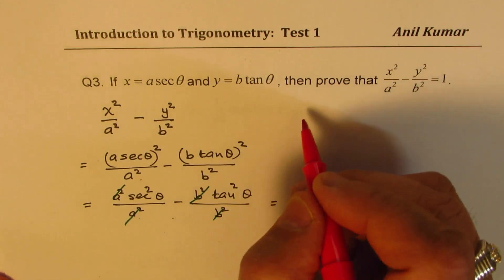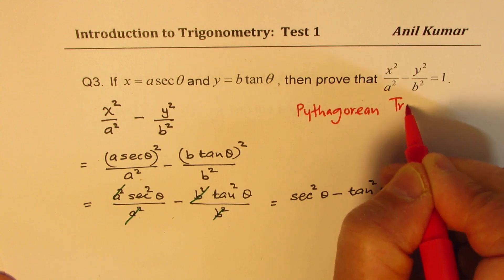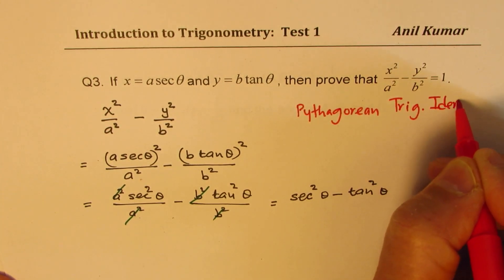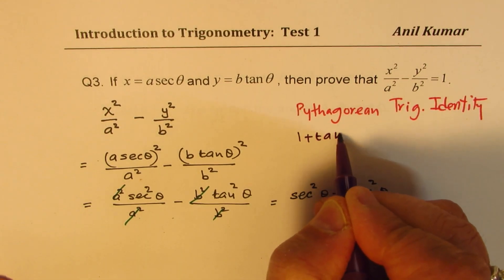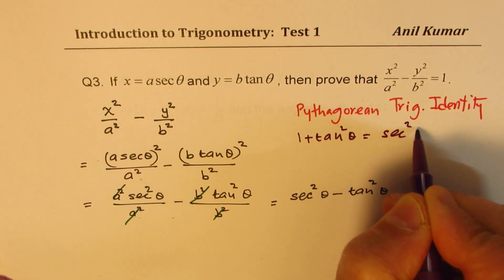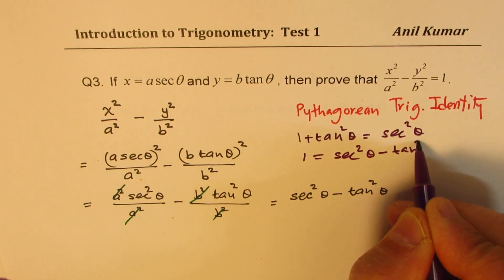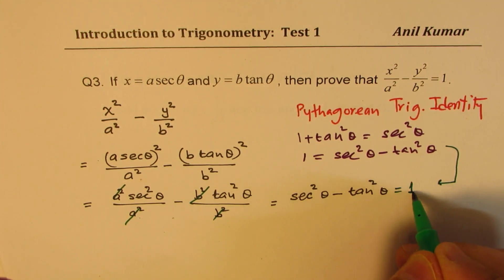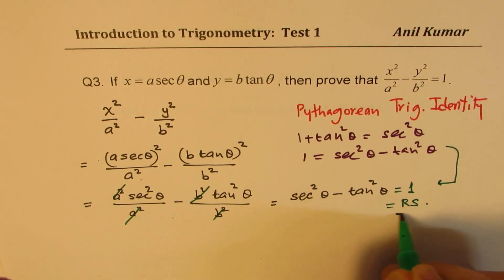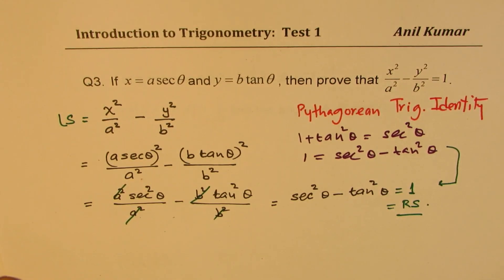Is secant squared theta minus tan squared theta equal to 1? Let's look into the Pythagorean identity. The Pythagorean identity for tan is: 1 plus tan squared theta equals secant squared theta. Rearranging gives 1 equals secant squared theta minus tan squared theta. So we can write that this expression equals 1, which is the right-hand side, proving that x squared over a squared minus y squared over b squared equals 1.